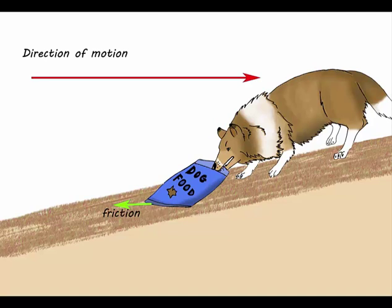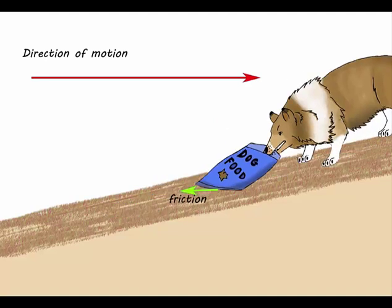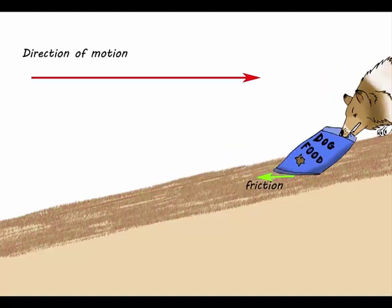Dogs can't grip surfaces as well as cats do, so we will say the slope is not very steep and the surface is a carpet.